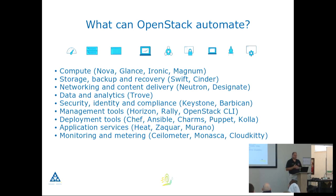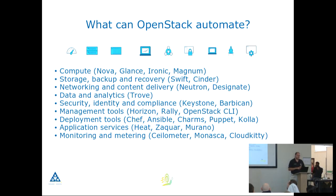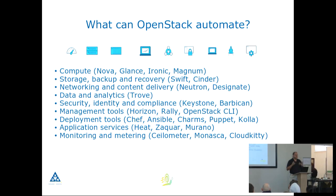From a deployment toolset point of view, it really is a case of choose your weapon. There are pre-built configurations for most of the popular deployment tools out there. Ansible is becoming really popular, and Juju from Canonical is quite popular as well. Looking at application services, Zaqar is a message queuing service, very similar to Amazon's SNS, where you can have a message queue as a service for your mobile applications. And Murano offers an application catalog.